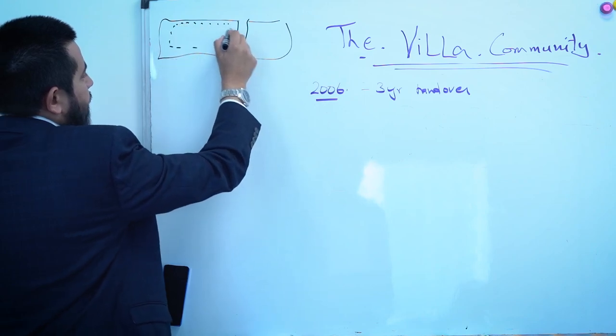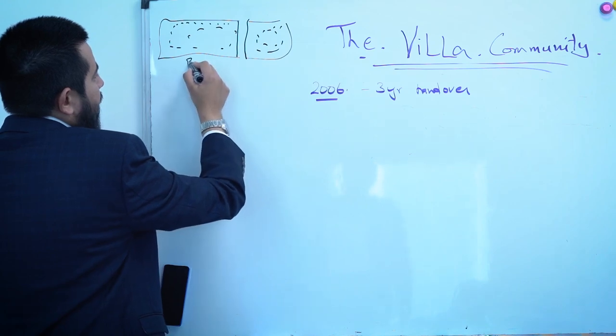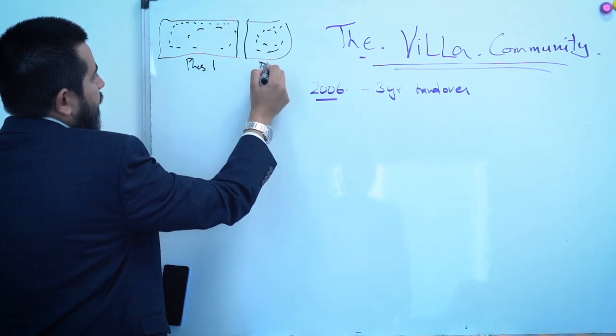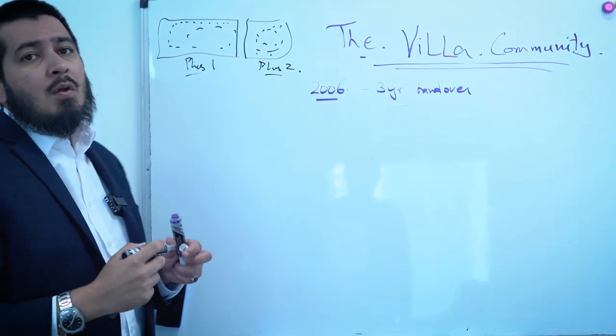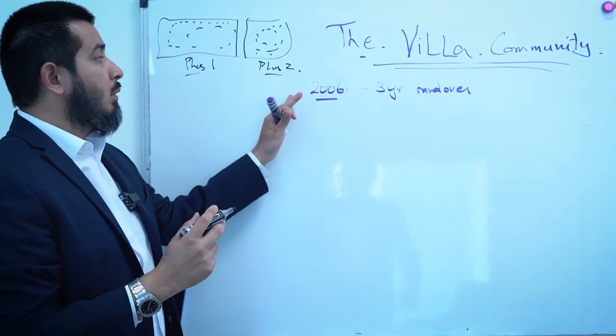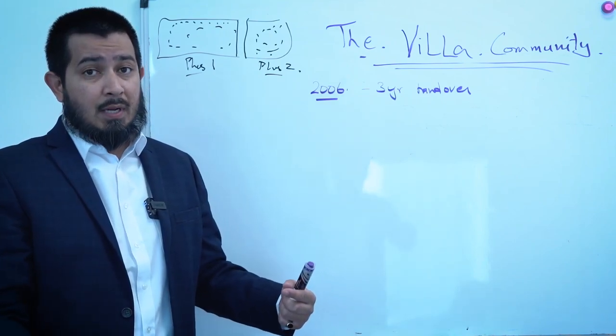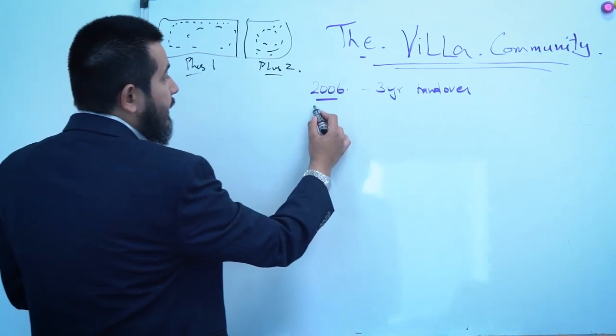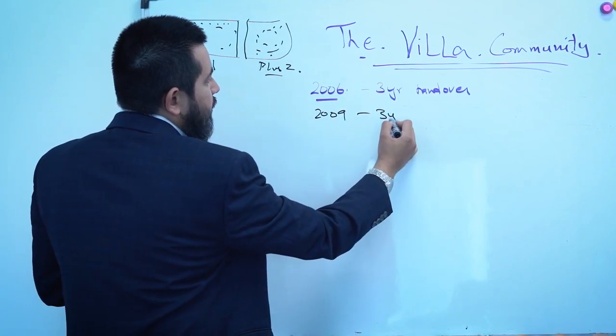They were going to build this large piece of land. The Villa community has a road that goes over here and then there's a lot of plots of land. There's phase one and phase two. Essentially speaking, the plots of land were sold in 2006 and there was going to be a three year handover period.